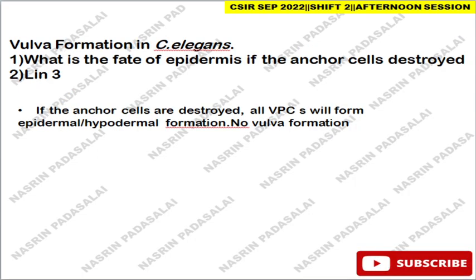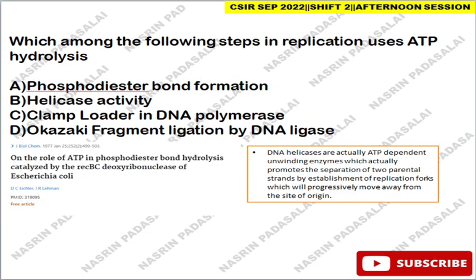Next: vulva formation — I think the question involves what happens when anchor cells are destroyed. You can refer Gilbert's book or Jodi Kumari's video on vulva formation. If the anchor cells are destroyed, all the VPCs will form into epidermal or hypodermal tissue, resulting in no vulva formation. I don't know the full question, so once the official question paper is out I will post a solved version.